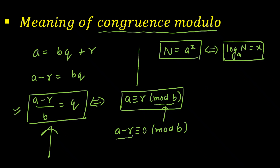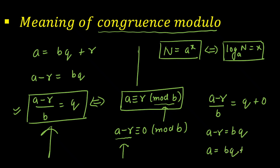When we write A minus R is congruent to 0 mod B, it means when you divide A minus R by B, you get remainder 0. So I can write A minus R equals BQ, and then A equals BQ plus R. These two forms are interconvertible. Congruence modulo is a function which gives you the remainder directly, involving only the number being divided, the remainder, and the divisor — the quotient is not involved.